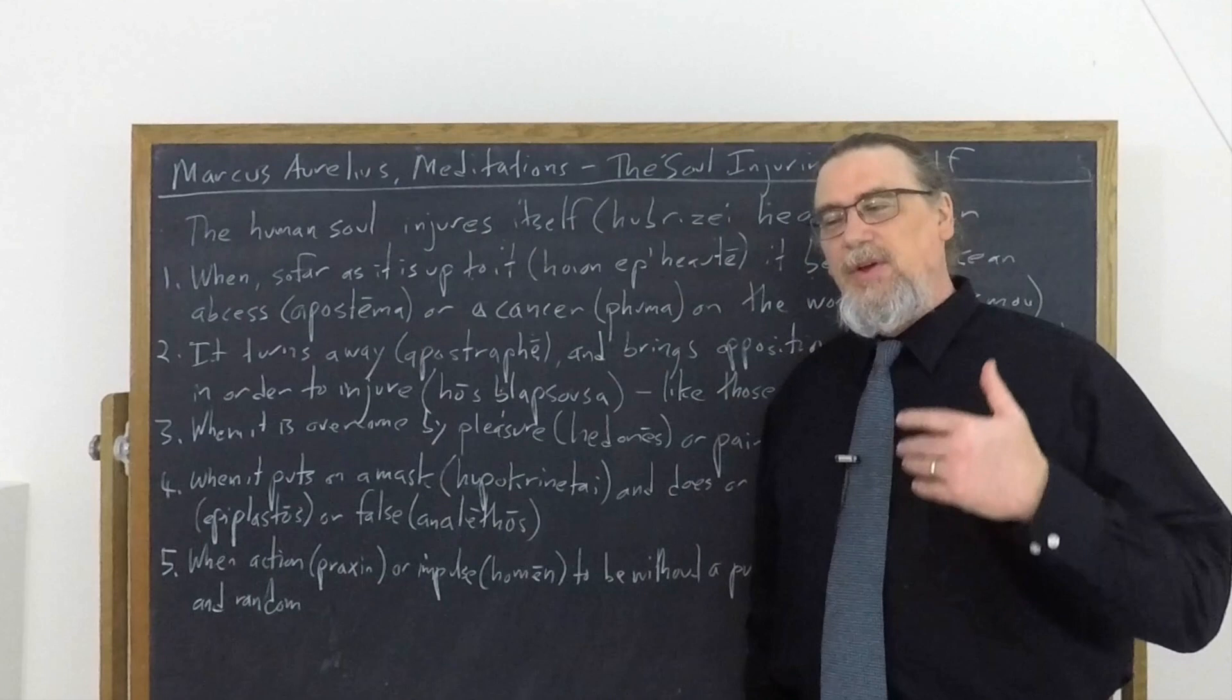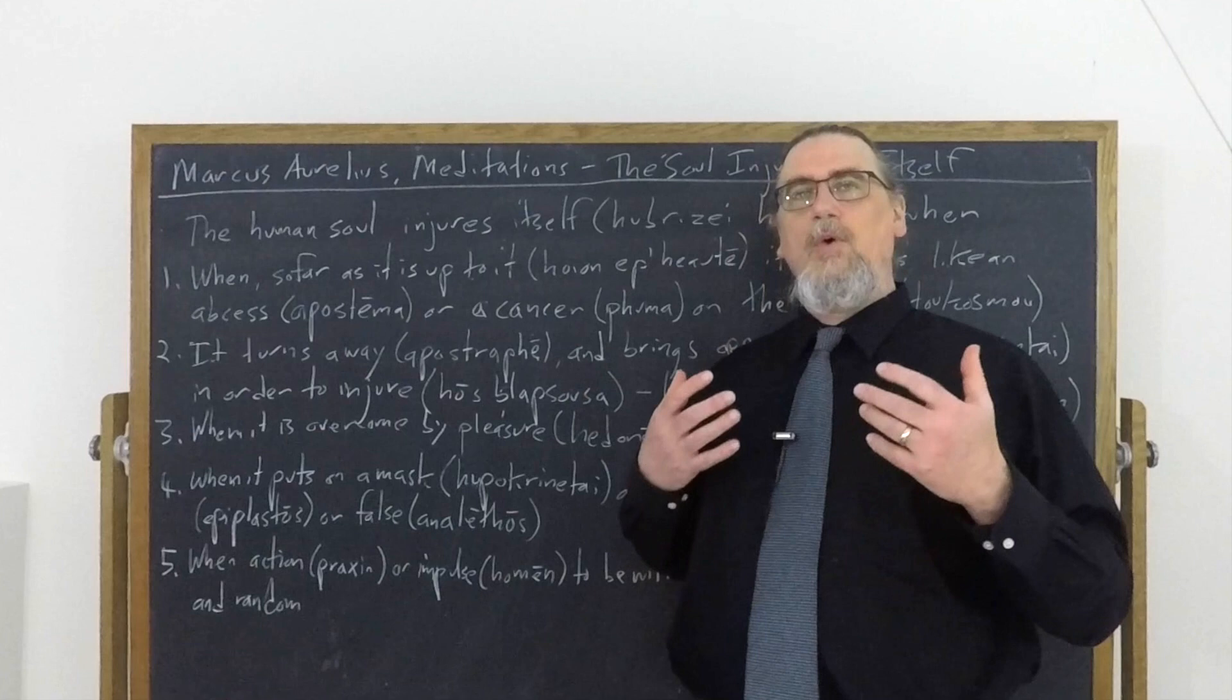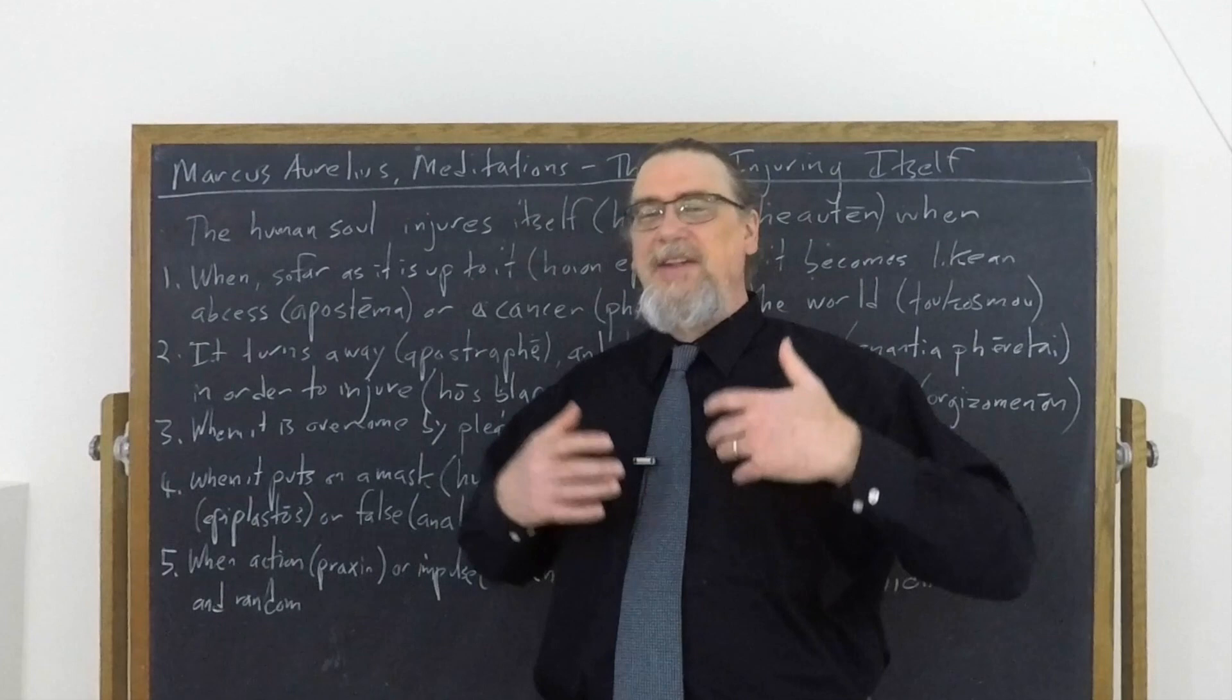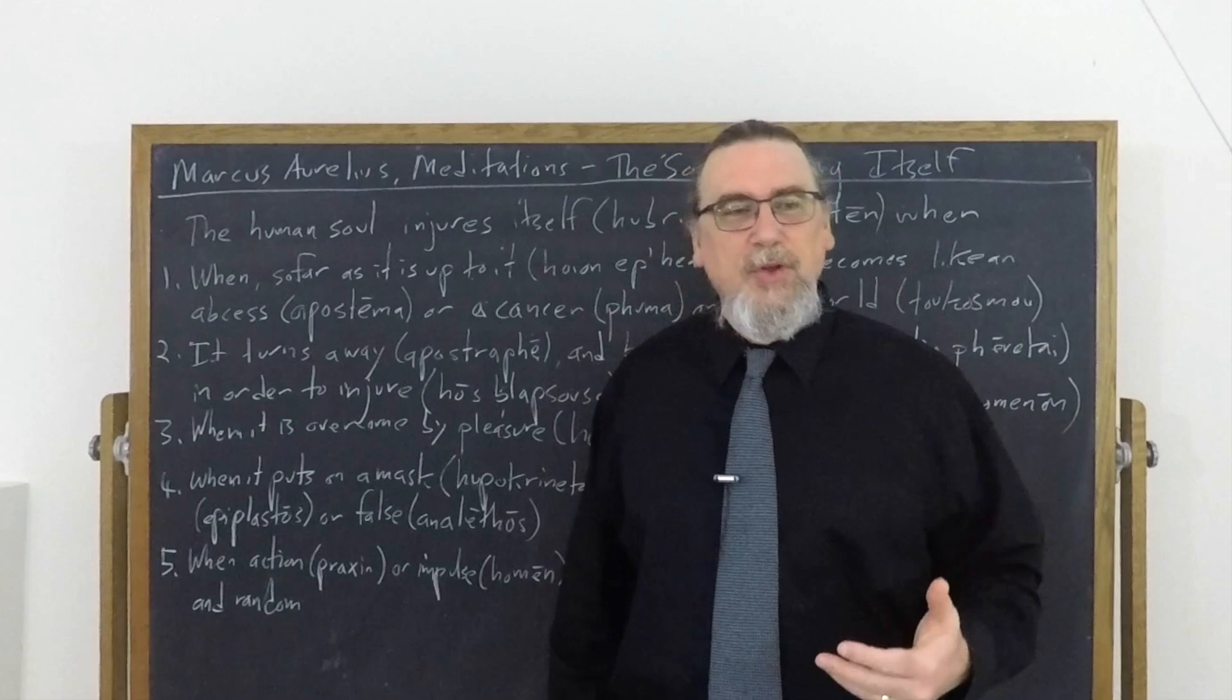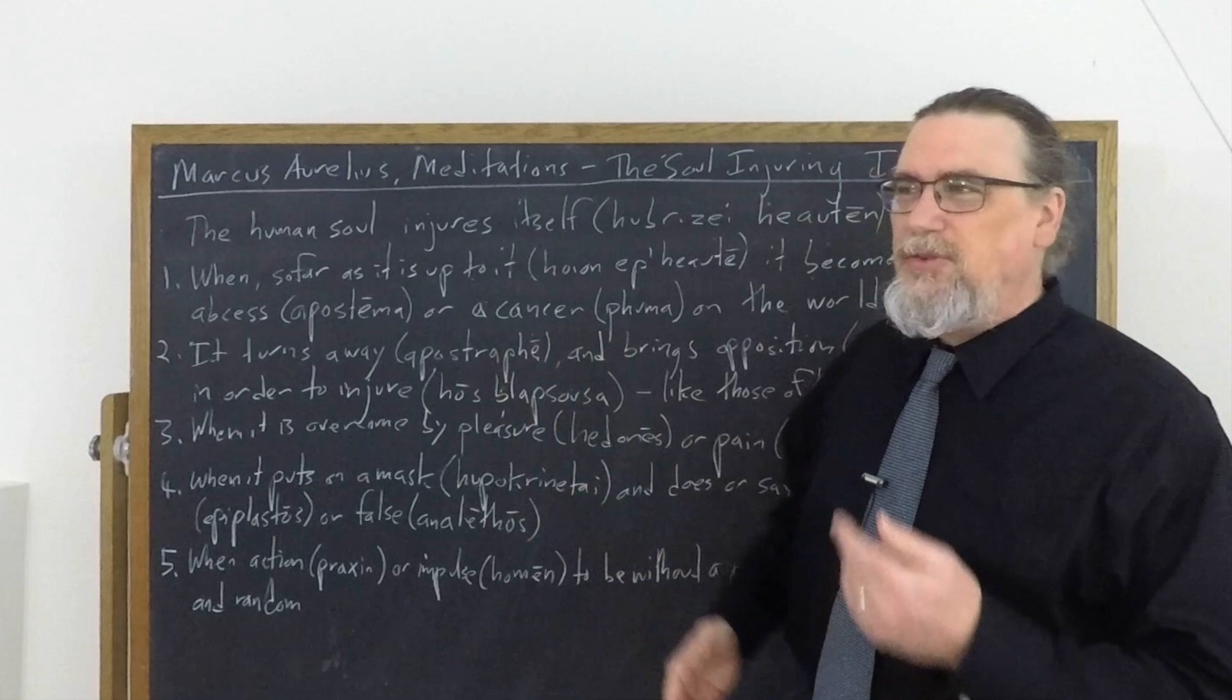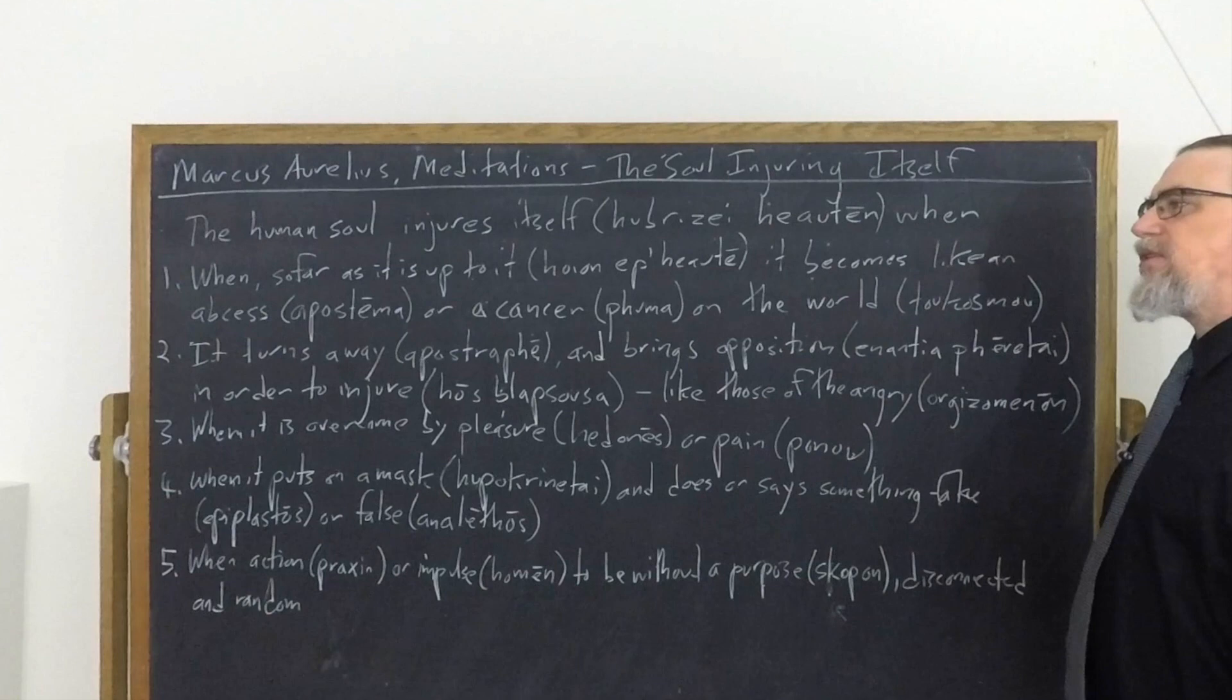So injuring itself, hubridze heauten. Hubridze is the verb for hubris, showing hubris, which typically we tend to associate with pridefulness or some sort of attempt to dominate other people. And it does include that in ancient Greek, but it also includes the sense of injuring, of doing harm to another, or in this case, it's very own self, a disregard for what's actually good and a willingness to allow damage to occur. So the human soul is damaging itself when it falls into these five problematic, and to some degree overlapping or interconnected attitudes, comportments, ways of doing things.